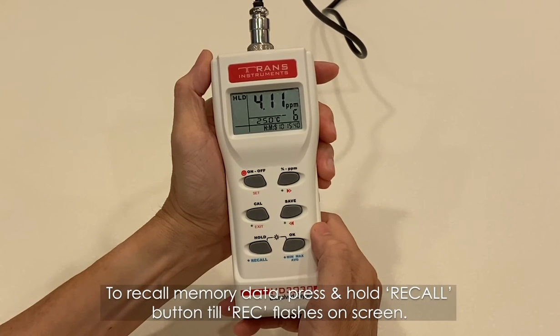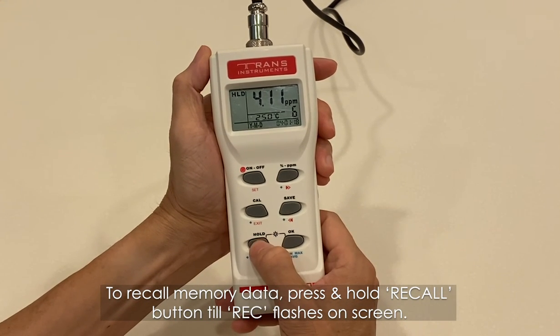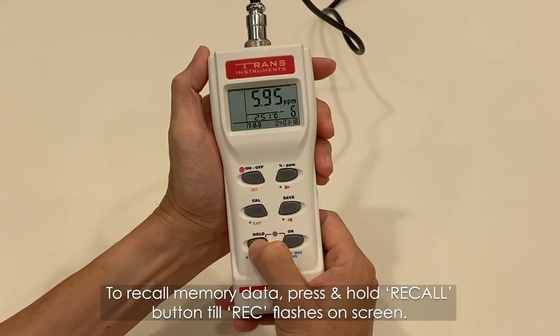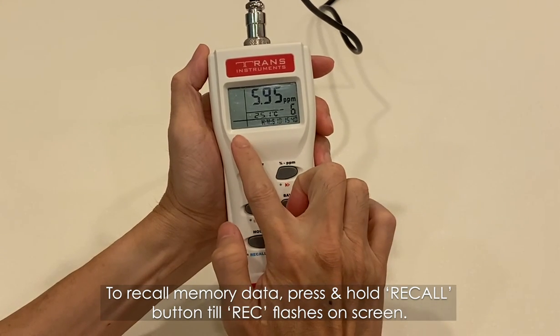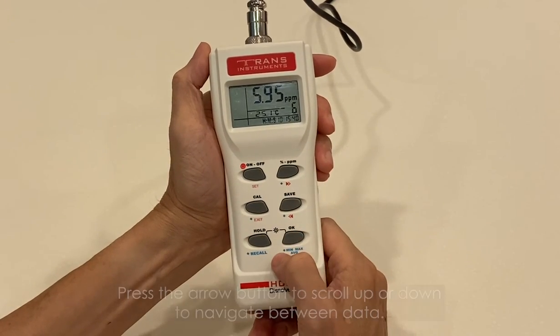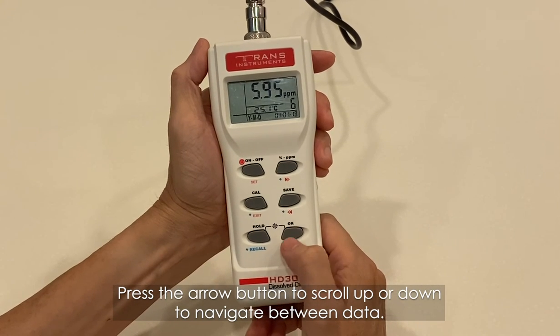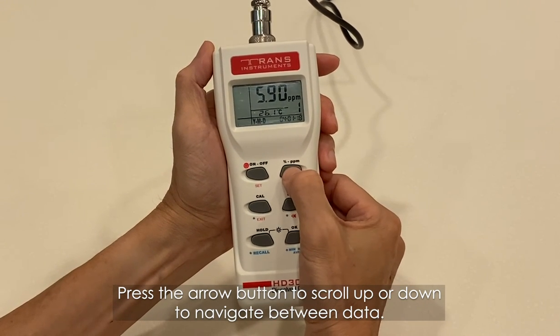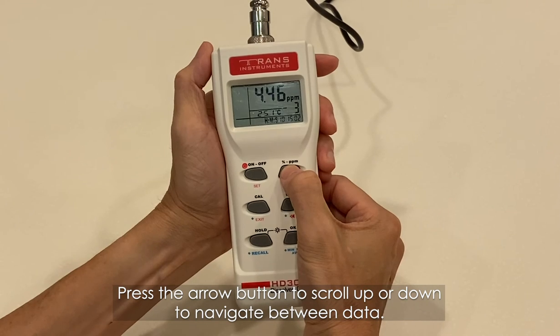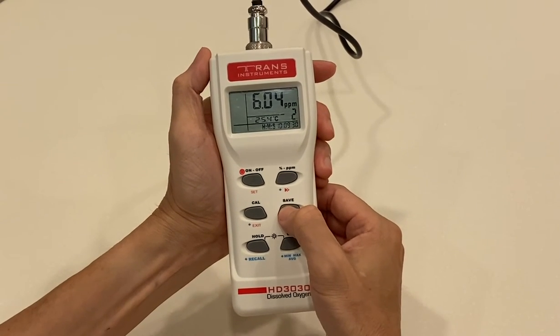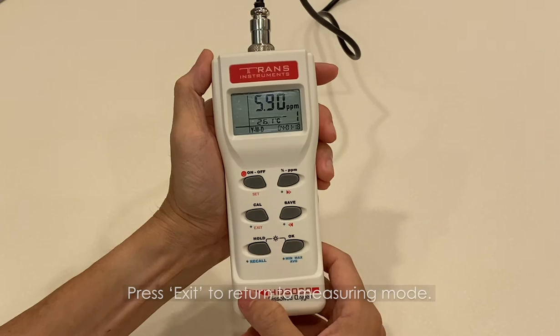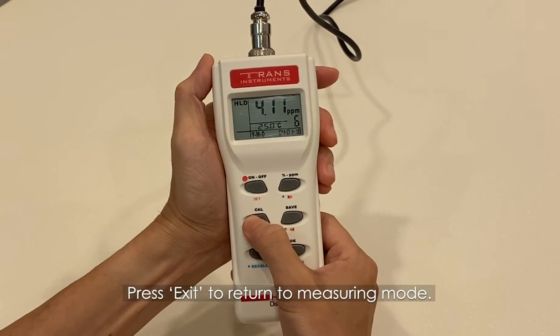To recall memory data, press and hold the record button until REC flashes on screen. Press the arrow button to scroll up or down to navigate between data. Press exit to return to measuring mode.